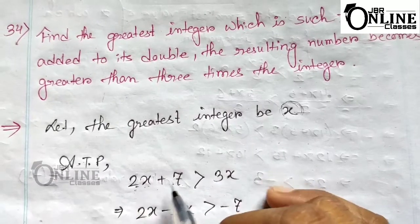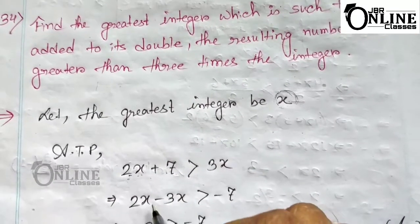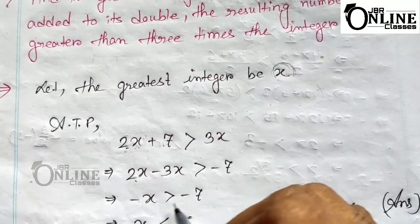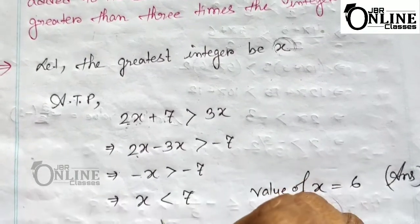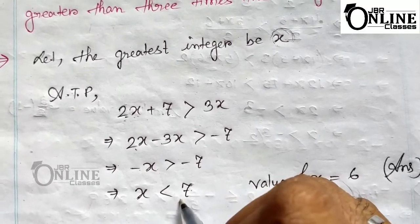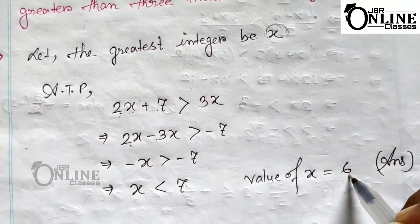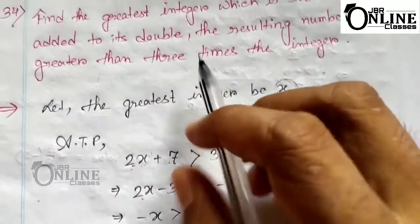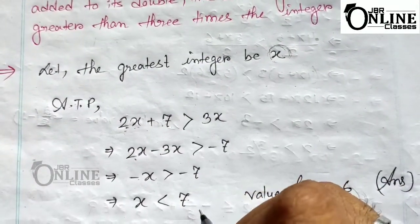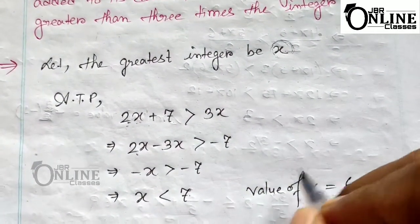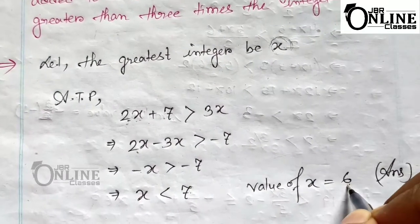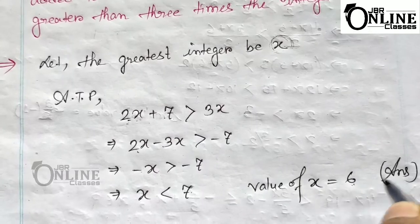So the inequation is 2x + 7 > 3x. Rearranging: 2x − 3x > −7, giving −x > −7, and therefore x < 7. Since we need the greatest integer less than 7, the value is x = 6.